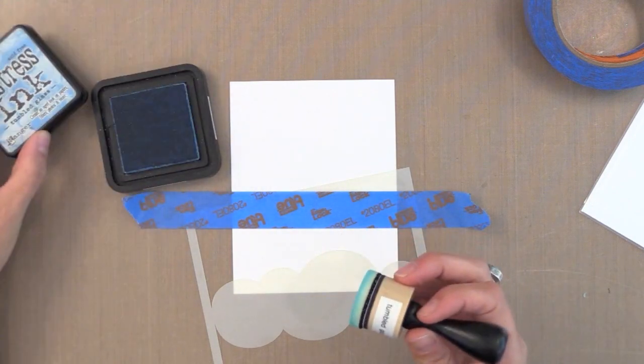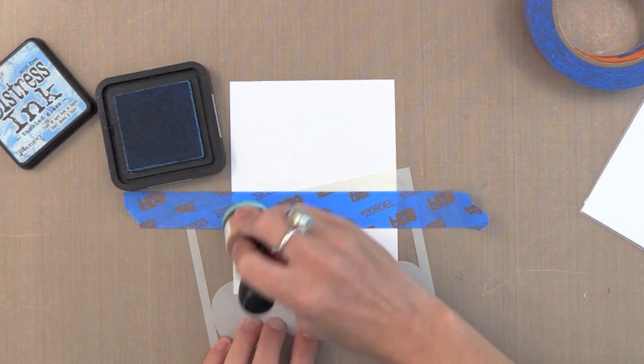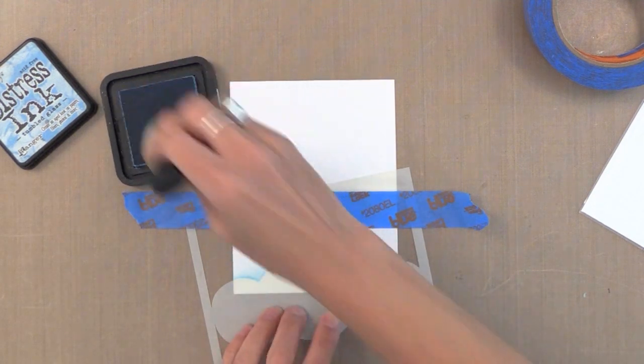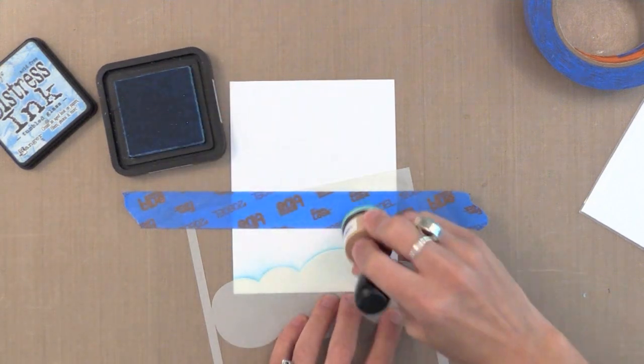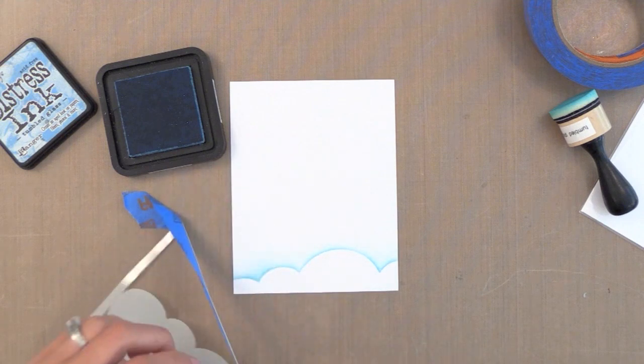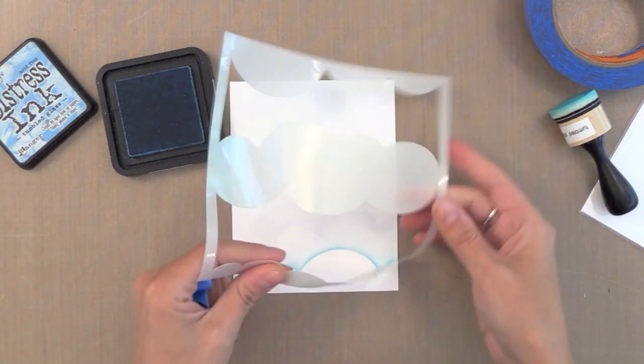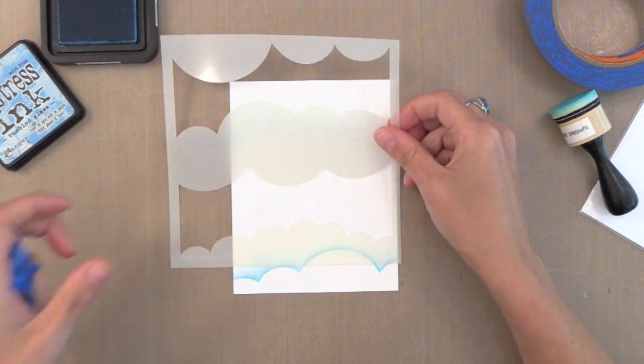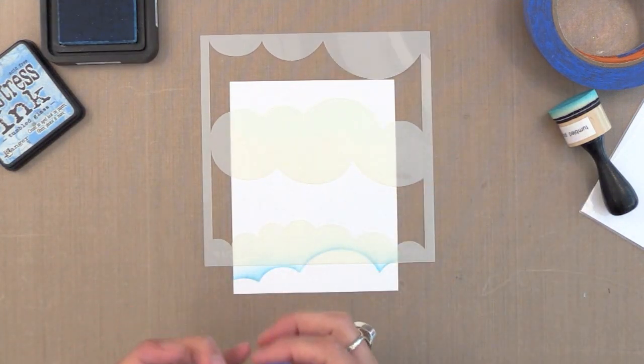I have my ink blending tool and my Distress Ink in Tumbled Glass is a great soft sky color. I'm starting with the blending tool on the stencil and I'm pulling it off onto the paper. This gives you a nice defined edge without too much color so you still have some white showing through around the clouds. You can see how quick and easy that is to do. Then I'm going to peel this off and go ahead and kind of flip and rotate my stencil around until I get another border that I want to add to this. I'll just work my way up.